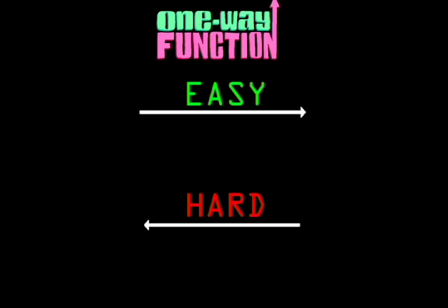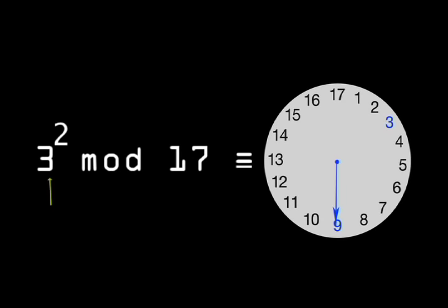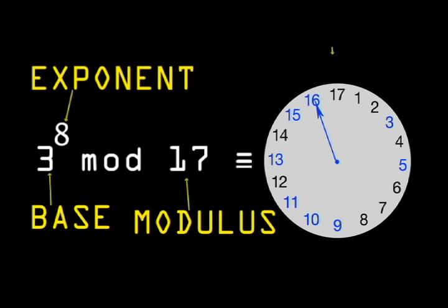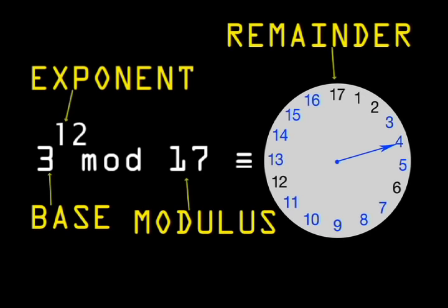For this, he turned to modular exponentiation, which we introduced as clock arithmetic in the Diffie-Hellman key exchange, as follows. Take a number, raise it to some exponent, divide by the modulus, and output the remainder.